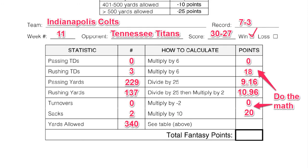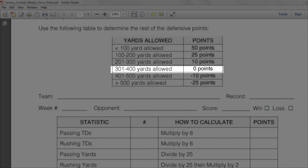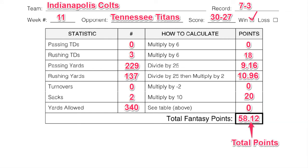Next, I'm going to do the math. From the table, I will see how many points I should include for yards allowed and record it on my weekly point sheet. My last step is to sum up all of my points. This is the total weekly fantasy points for my team: 1.67.